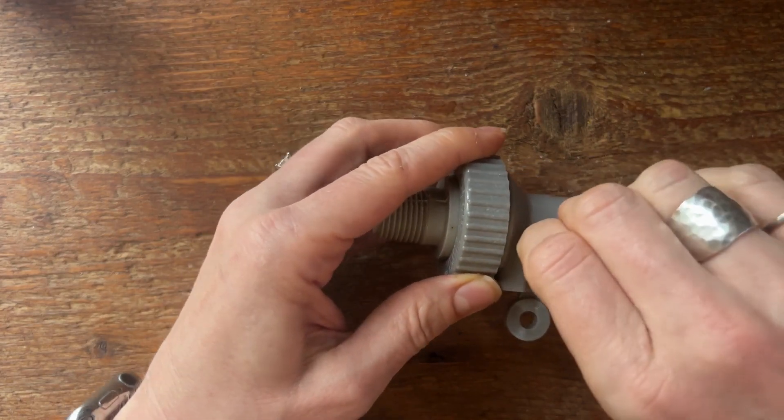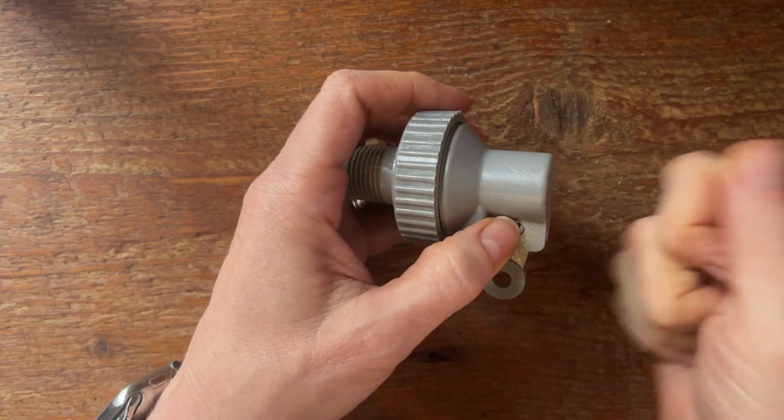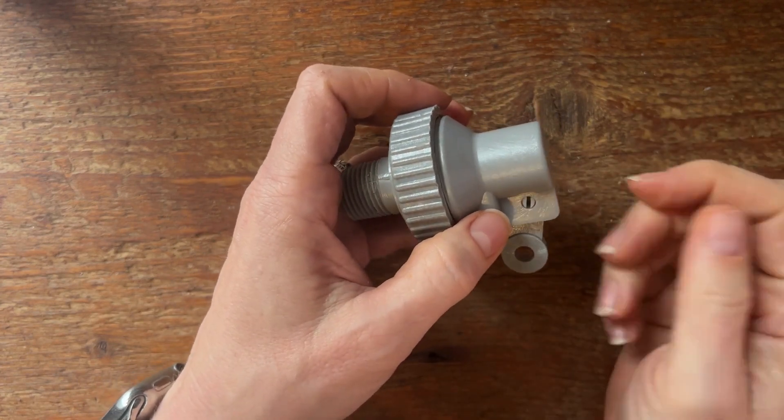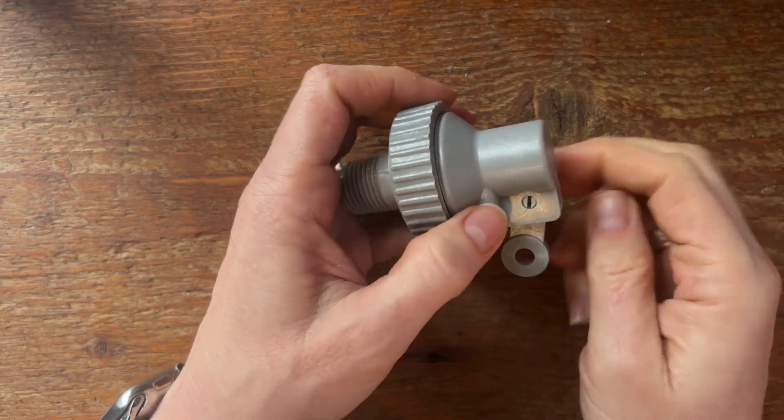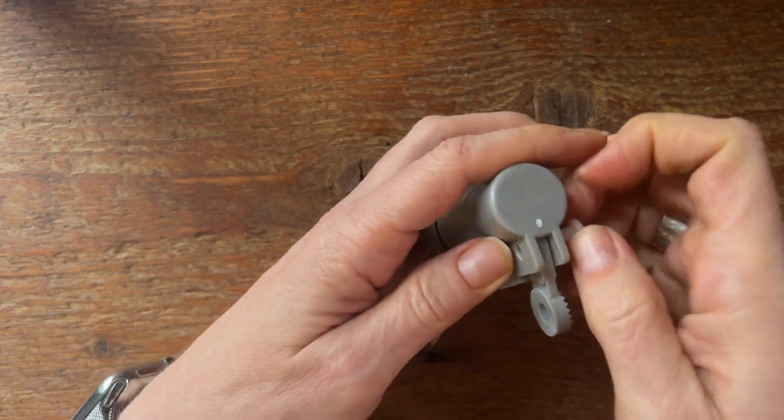You may have to take vice grips or a wrench or something to give you a little leverage. Some of them will be pretty tight, but you squeeze that slot together and you can see that it's popping out here on the side.